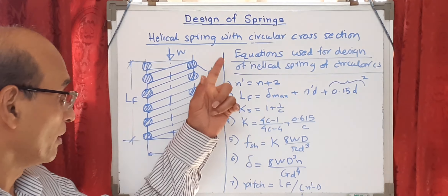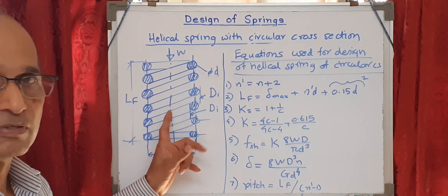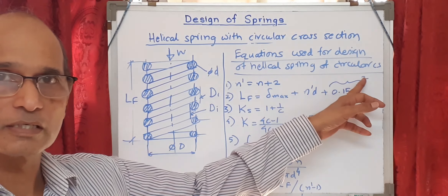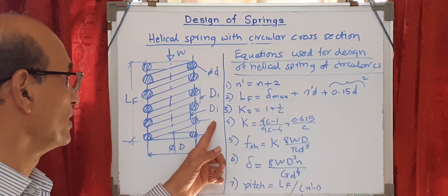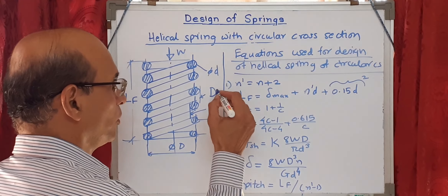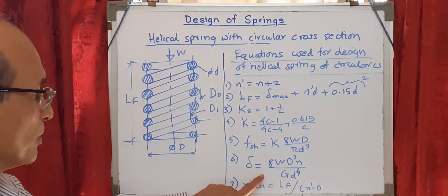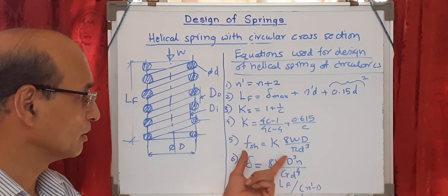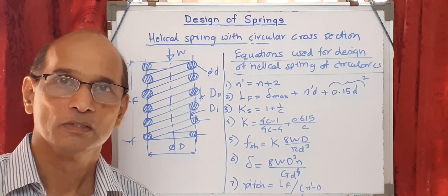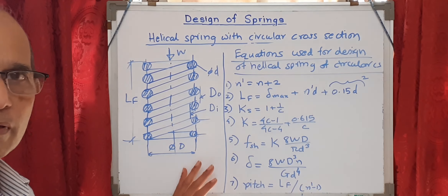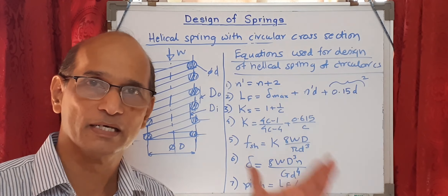These are the different equations used for designing a helical compression spring with circular cross-section. When a load W is applied, a spring with coil diameter D, internal diameter d_i, external diameter d_o, wire diameter d, and free length L_f will give deflection delta. The induced shear stress in the wire is given by the stress equation. This is how we design a particular spring when data is given.